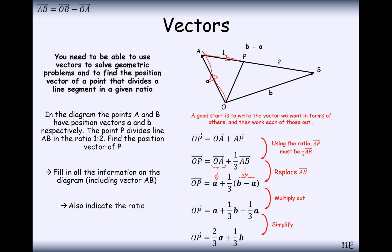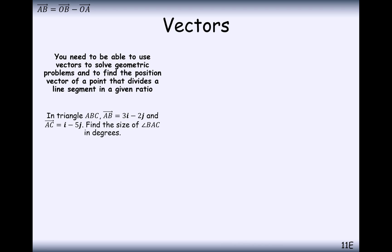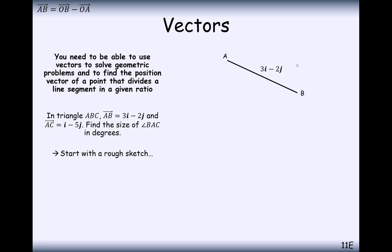So that's the classic geometric vectors question. Now another question to do with geometric problem solving. A triangle ABC where the vector from A to B is 3i minus 2j, and the vector from A to C is i minus 5j. Find the angle BAC in degrees. The first thing to do is draw yourself a rough sketch — go three to the right and two down for the first vector, and one across and five down for the second. We want to find the angle BAC.